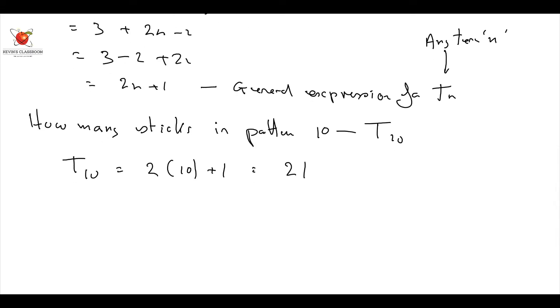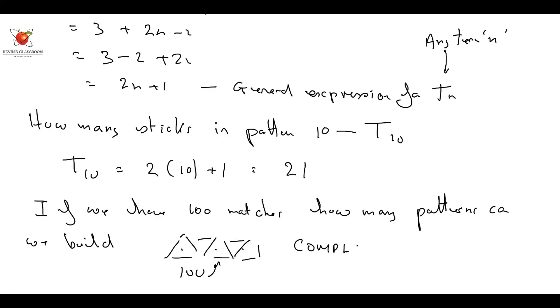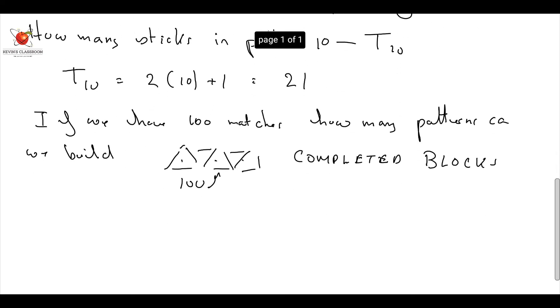The next step is they say, the other way they're asked is if I say, if we have 100 matches, how many patterns can we build? What are they saying? They're saying, if we keep going with this pattern like this, and we have got 100 of these, how many of these completed blocks? So we have to make sure that we get completed blocks, or whatever you want to call it. How do I do that? What they have now told me is they've said, therefore TN is equal to 100, and my question is to find N.